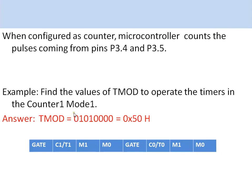When the timer is configured as a counter, the microcontroller counts the pulses coming from pins P3.4 and P3.5. For example, if Timer 1 is configured as a counter in Mode 1, the value to be loaded in the TMOD register is 0x50, which corresponds to a specific decimal value loaded into the TMOD register.